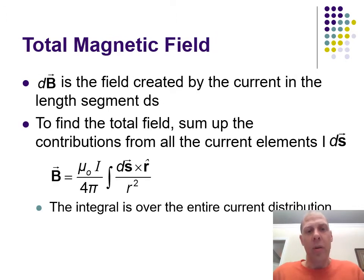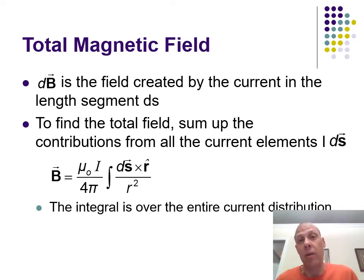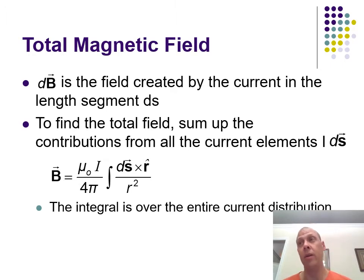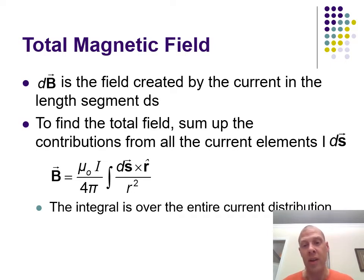If you pull out everything that's constant, you get mu naught, I, and 4π as constants, leaving the integral of ds cross r-hat over r-squared. Since r-hat is just a direction indicating the perpendicular piece, you can put in sine of theta. Biot-Savart is most effective when sine of theta equals 1, so you're just integrating ds over r-squared — basically the integral of s over r-squared.